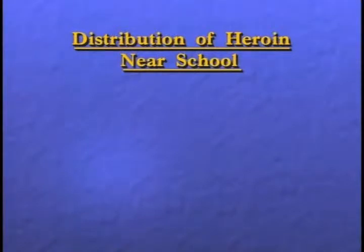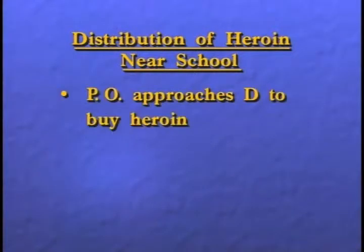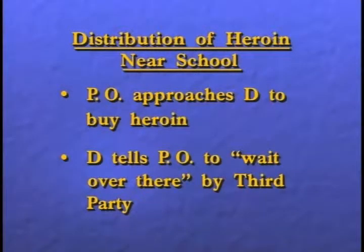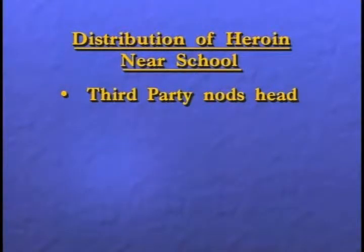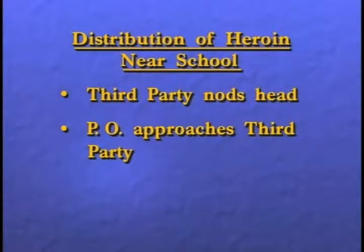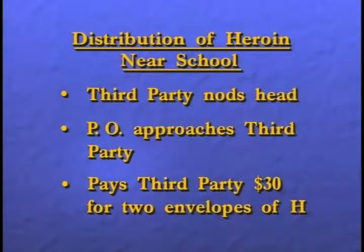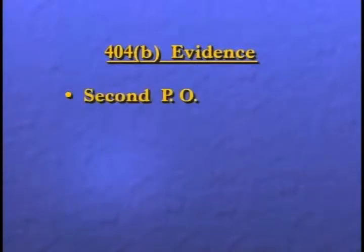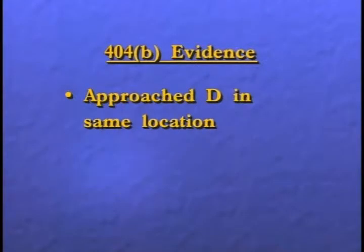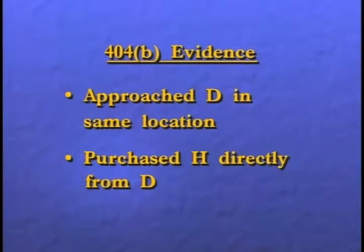I think it's time to turn to our first scenario and begin discussion of this drug distribution case. You'll have a copy in your written materials, but let's go over the specifics briefly. In scenario one, the charge is distribution of heroin near a school. A police officer approaches the defendant to buy heroin. The defendant tells the officer to 'wait over there,' near a third party. The third party nods his head, and the officer approaches the third party and pays him $30 for two envelopes of heroin.